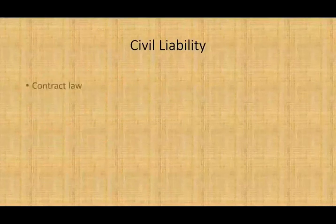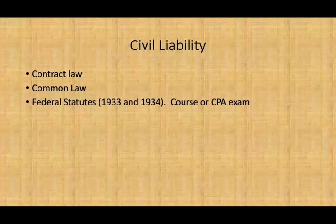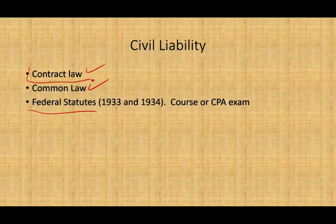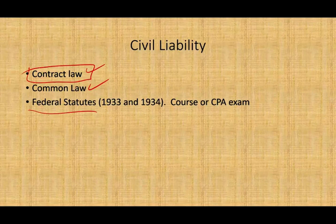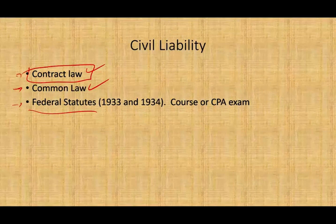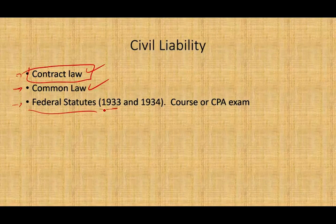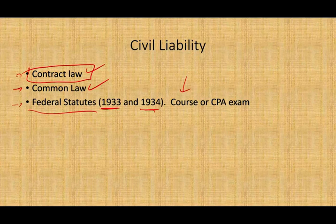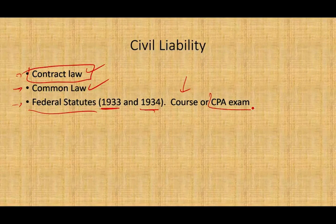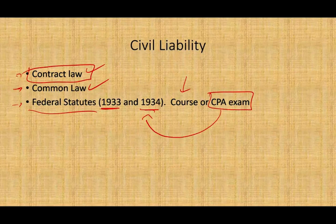Now, how can an auditor be sued? Auditors can be sued under three categories: contract law, common law, and federal statutes. The least concern for the auditor is contract law, which is the contract between the auditor and the client. We'll discuss all three in the next few sessions. Regarding federal statutes, we're only going to cover the Securities Acts of 1933 and 1934, as those are what's covered in a typical undergraduate or graduate auditing course and on the CPA exam.